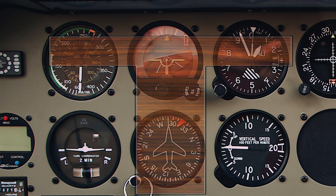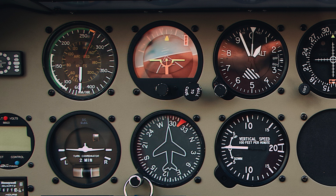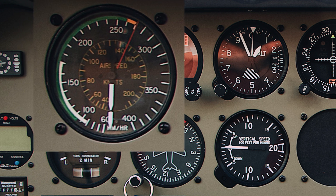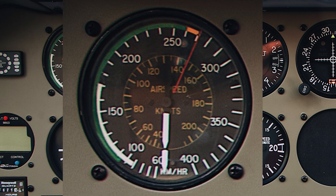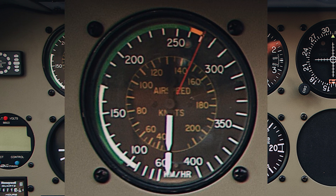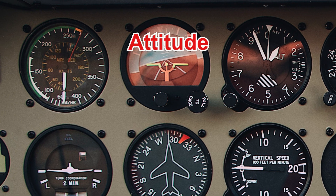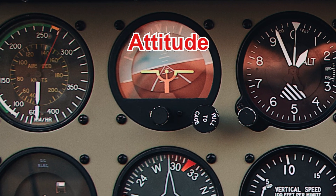Basically, there are four flight instruments that form the well-known T arrangement. Looking at the T arrangement, you can see that on the top left side of those four basic instruments there is an airspeed indicator. The airspeed indicator would indicate the speed in nautical miles per hour.